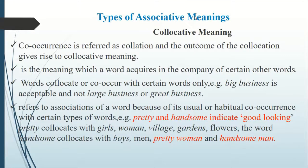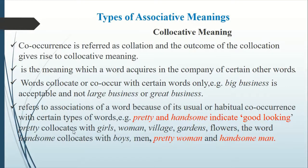Another type of associative meaning is collocative meaning. Co-occurrence is referred to as collocation, and the outcome of collocation gives rise to collocative meaning. Collocative meaning is the meaning which a word acquires in the company of certain other words — words collocate or co-occur with certain words only. For example, 'big business' is acceptable but not 'large business' or 'great business.' Similarly, 'pretty' and 'handsome' both indicate good-looking, but 'pretty' collocates with girls, women, village, garden, and flowers, while 'handsome' collocates with boys and men.